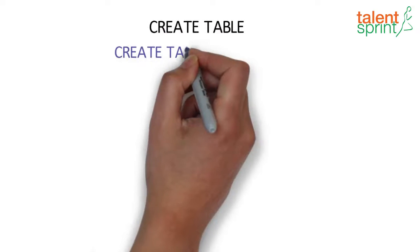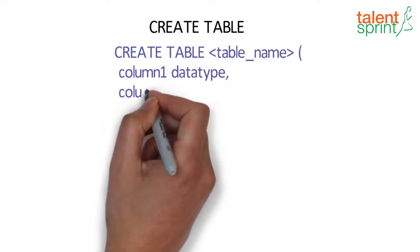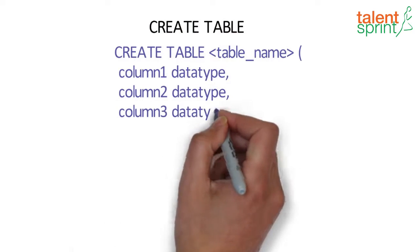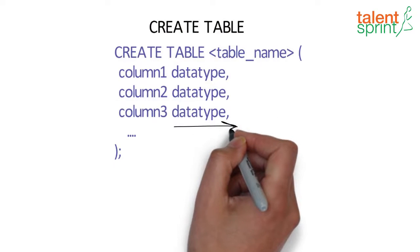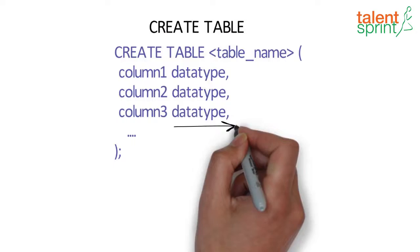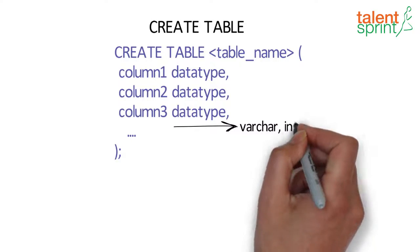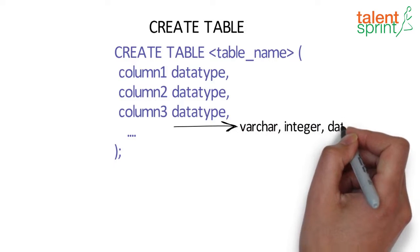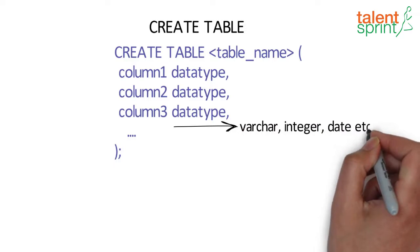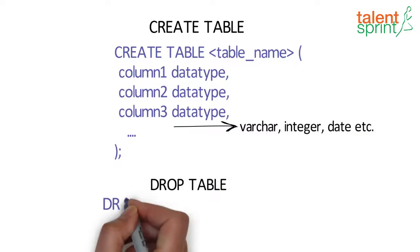The CREATE TABLE statement is used to create a new table in a database. Column one, two, and so on are the column names that you want, and the data type parameter specifies the type of data the column can hold — for example, varchar, integer, date, etc. The DROP TABLE command is fairly simple as shown.